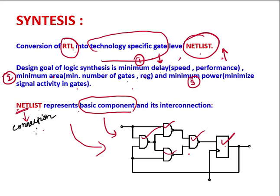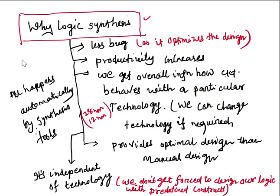These are the design goals of logic synthesis. When we go for the logic synthesis process, we have to think about all these constraints: minimum delay, minimum area, and minimum power. Logic synthesis is required because it provides less bugs — the synthesis process optimizes the design further — and it also increases productivity.